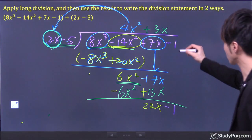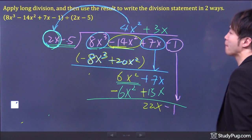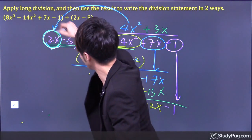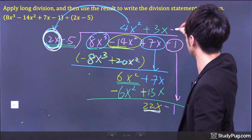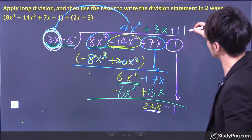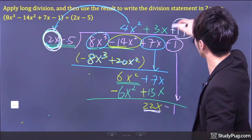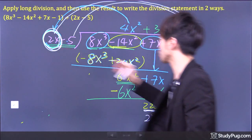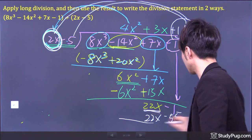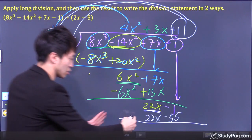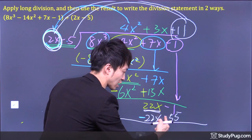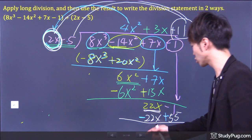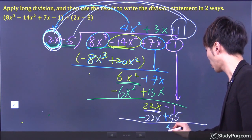Bring down minus 1. From 2x to 22x, we multiply by positive 11. Multiply back: 11 times 2x gives 22x, and 11 times negative 5 gives negative 55. Attach a negative sign to the bottom terms — negative 55 becomes positive 55. So 22 minus 22 disappears, and negative 1 plus 55 gives positive 54.